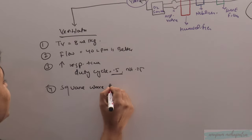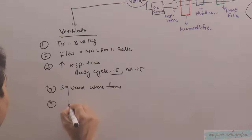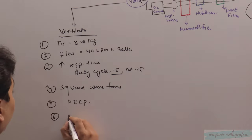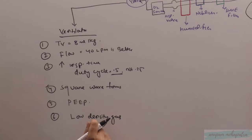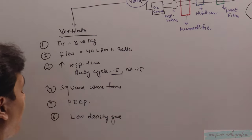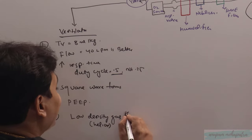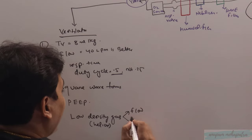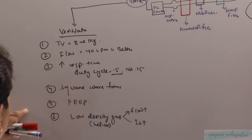Square waveform produces laminar flow, so square waveform is desired. Then we have to provide PEEP. And if you can provide low-density gas, low-density gas will definitely produce laminar flow. But you have to remember, if you're giving low-density gas like heliox, you have to increase the flow and inspiratory time as described.